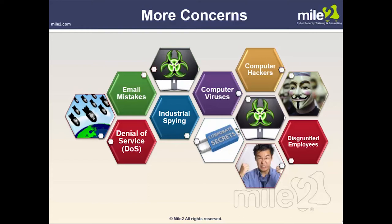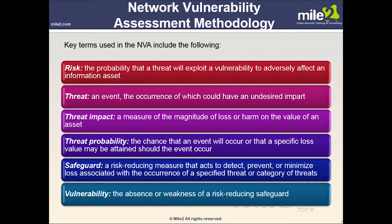Key terms used in network vulnerability assessment methodology include: Risk — the probability that a threat will exploit a vulnerability to adversely affect an information asset. Threat — an event whose occurrence could have an undesired impact. Threat impact — a measure of the magnitude of loss on the value of an asset. Threat probability — the chance an event will occur. Safeguard — a risk-reducing measure that detects, prevents, or minimizes loss. Vulnerability — the absence or weakness of a risk-reducing safeguard.